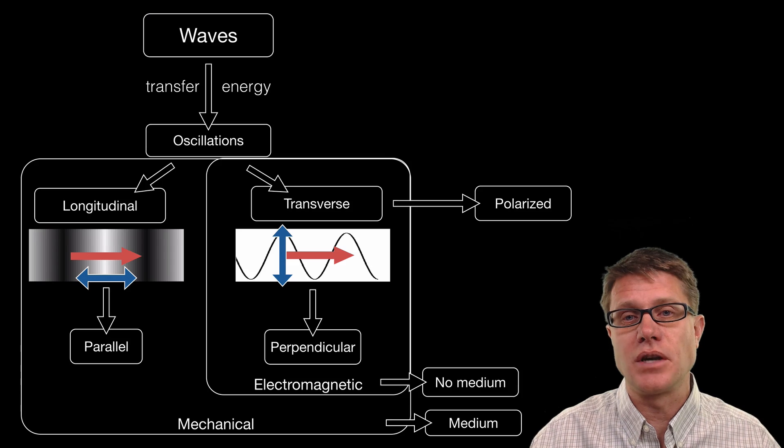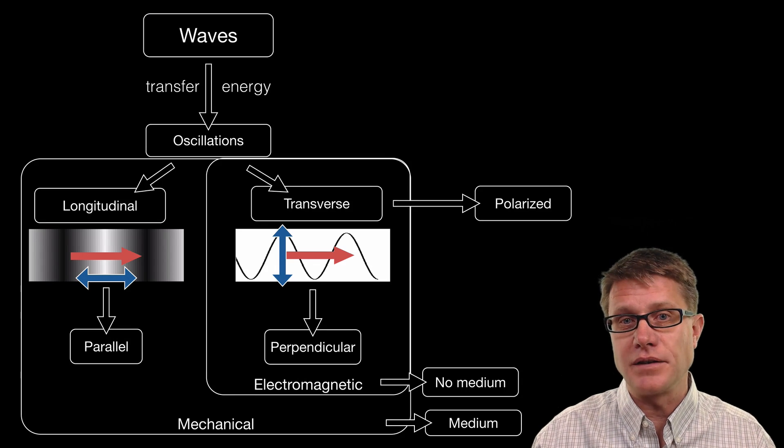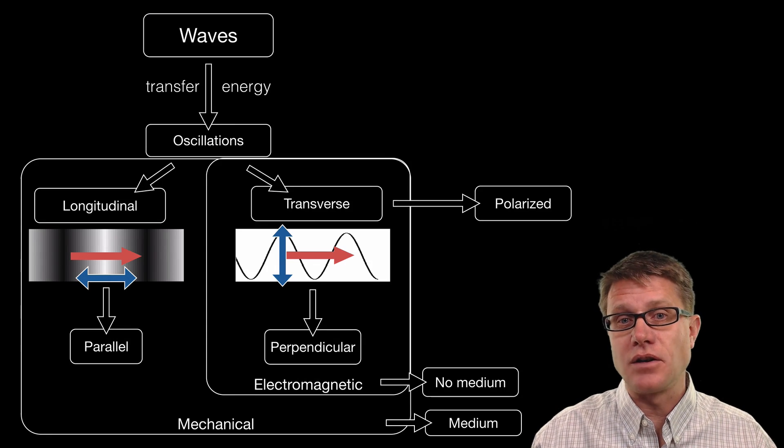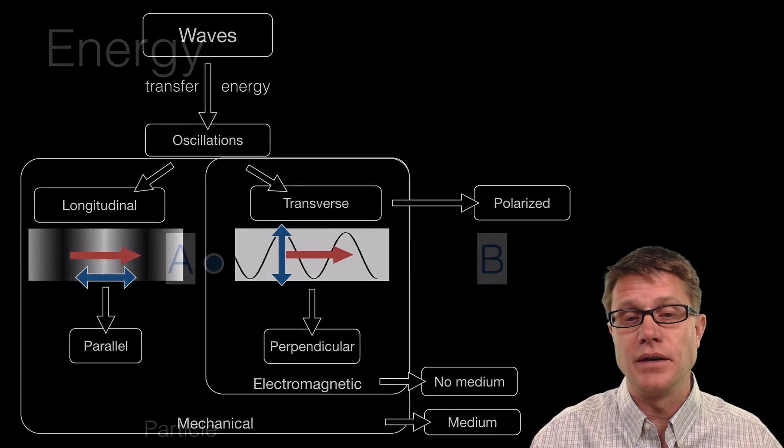An interesting characteristic of transverse waves is they can be polarized. And so we can use thin slits to only let certain transverse waves through.